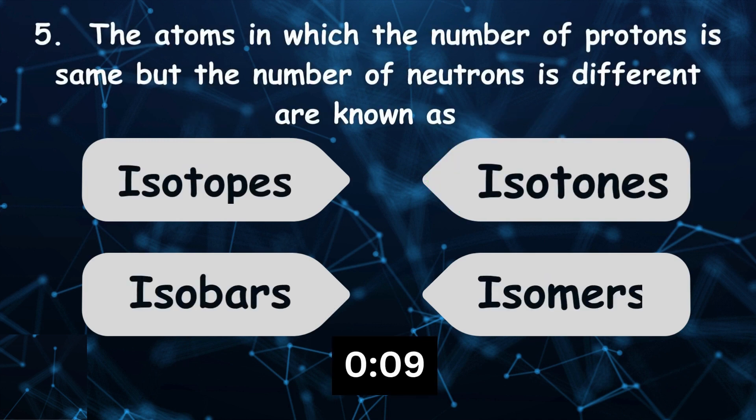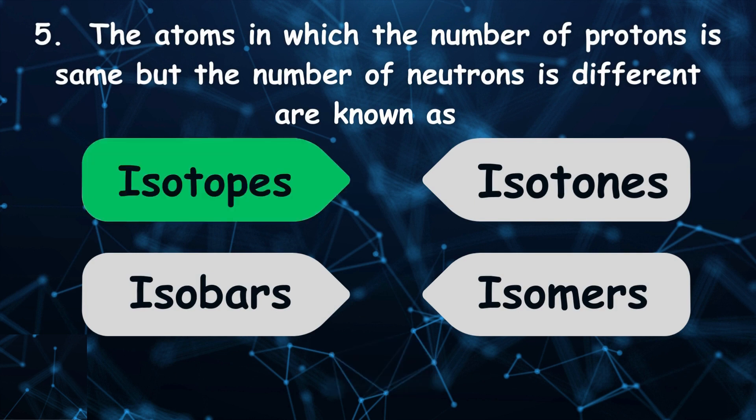The atoms in which the number of protons is same but the number of neutrons is different are known as isotopes.